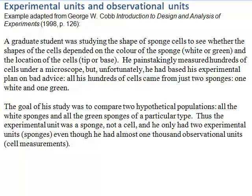All these hundreds of cells came from just two sponges — one white and one green. The experimental unit is the smallest unit attached to a treatment independently of other units. In this case the treatment is the colour of the sponge, and there are only two sponges attached to each treatment: one white and one green. So there are only two experimental units.